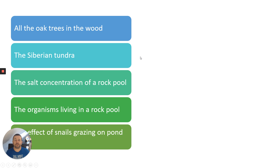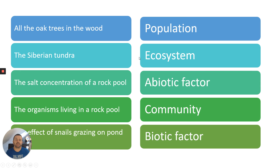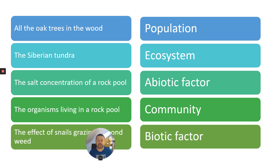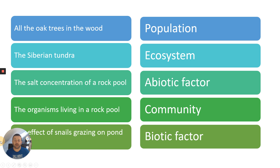Here are the answers: all the oak trees in the wood — that is a population. The Siberian tundra — that is an ecosystem. The salt concentration of a rock pool — that's an abiotic factor. All the organisms living in a rock pool — that is the community. The effect of snails grazing on pondweed — that is a biotic factor. Hope you found this video useful. Please subscribe if this is on Dr. Biology, and I will see you soon.